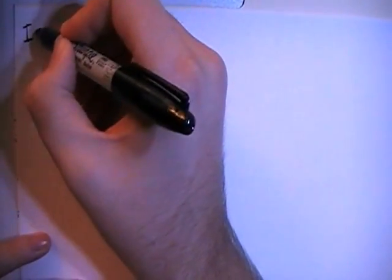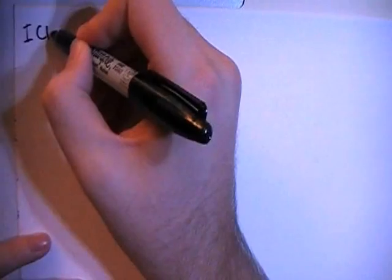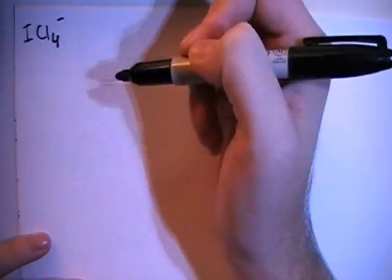Hey guys, in this video I'm going to show you how to draw the Lewis dot structure for the tetrachloroiodate ion. So here we go. This is going to be ICl4-, that's the formula.